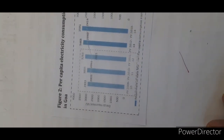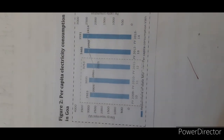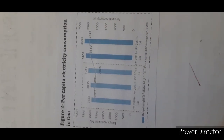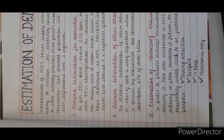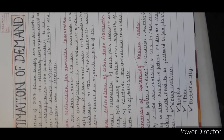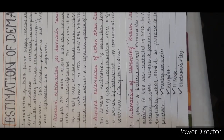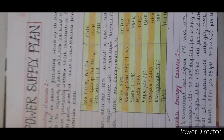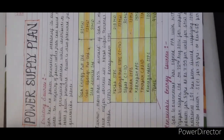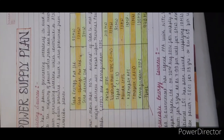Then per capita electricity consumption and estimated demand are covered, followed by the power supply plan — detailing how and where the power supply is distributed.